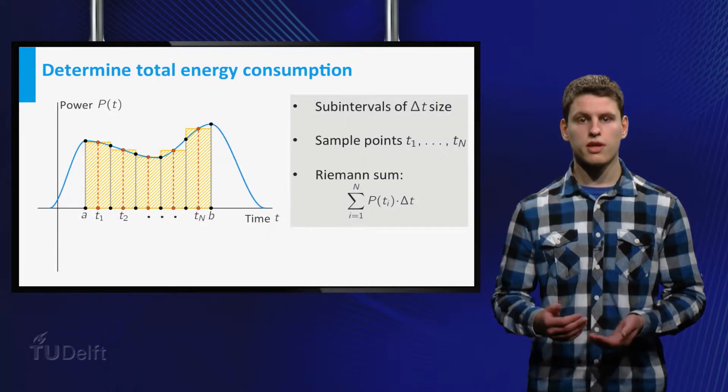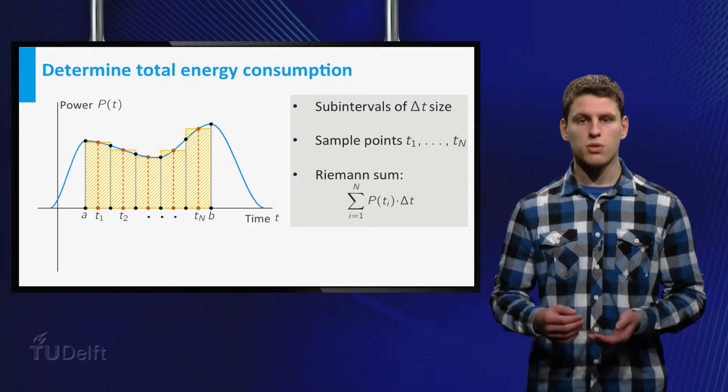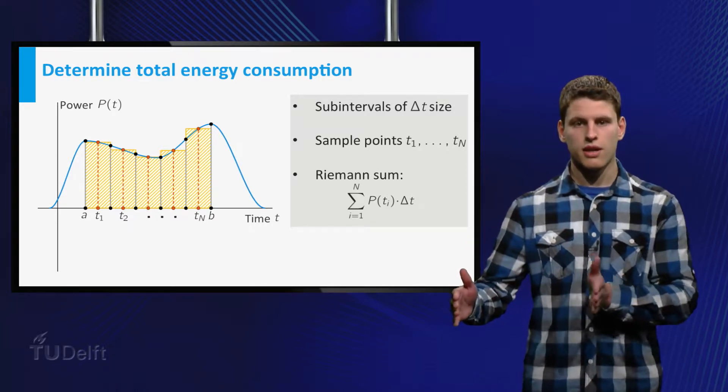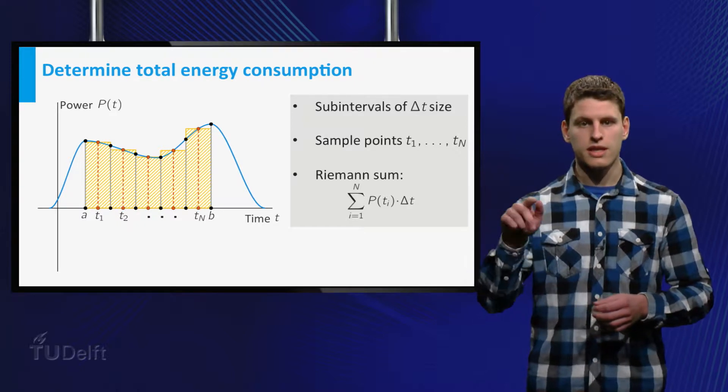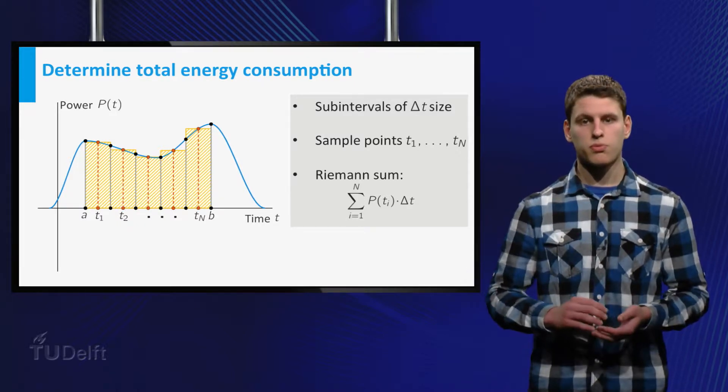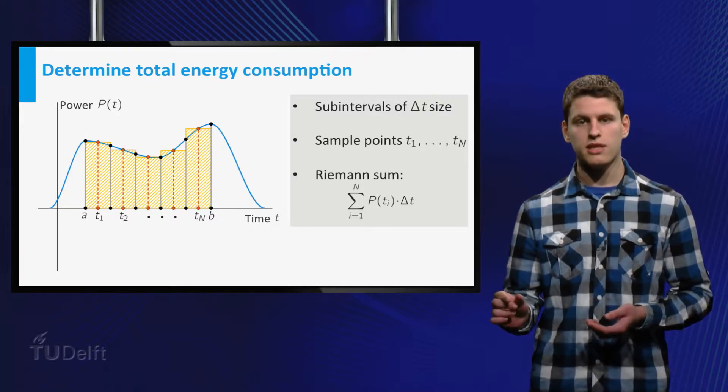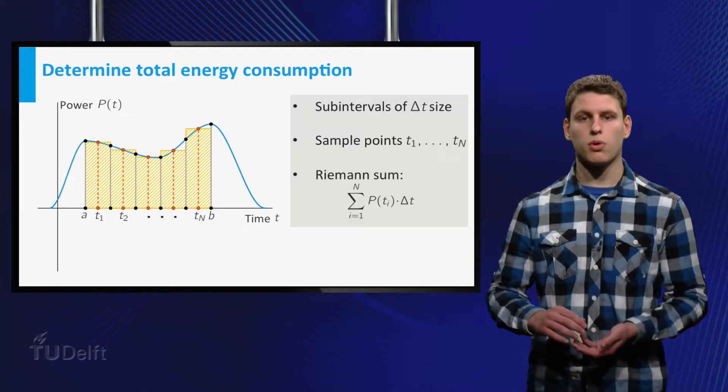In order to find the total energy consumed, we divide the interval into smaller intervals and pick a sample point in each interval. We could then approximate the total energy by summing the delta t times the power at each point.